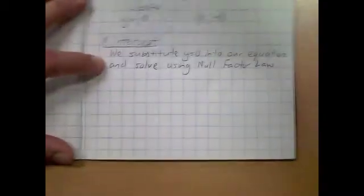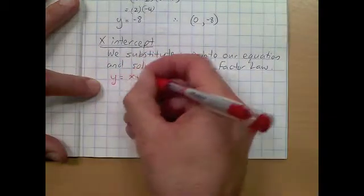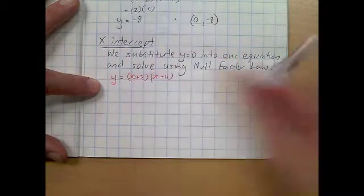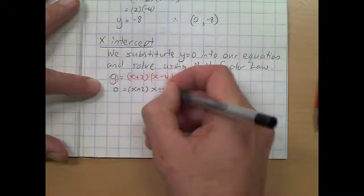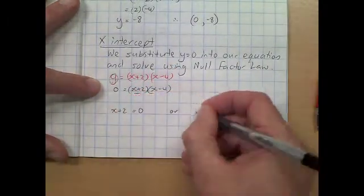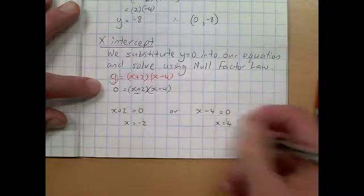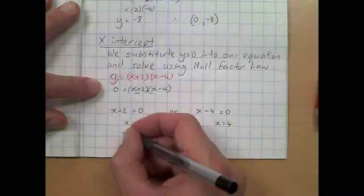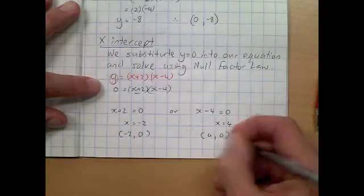We're going to have 0 in the place of our y. Using our null factor law, one bracket must equal 0: x plus 2 must equal 0, or x take 4 must equal 0. We solve to get x equals negative 2 and x equals positive 4. Writing our coordinates: negative 2, 0 and 4, 0. Factored form is really good and simple to find our x-intercepts.